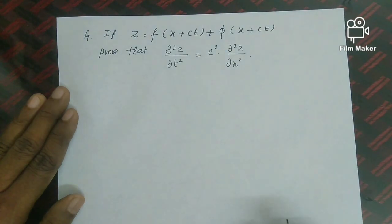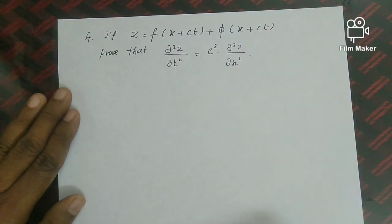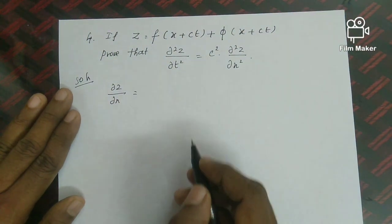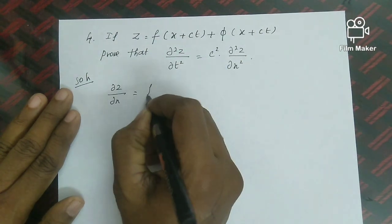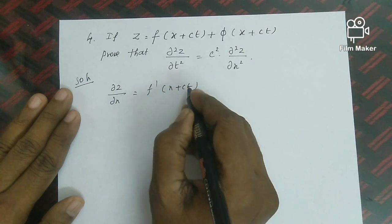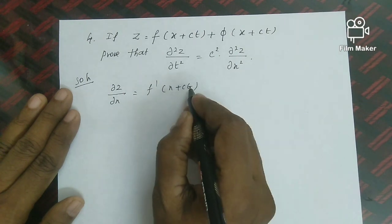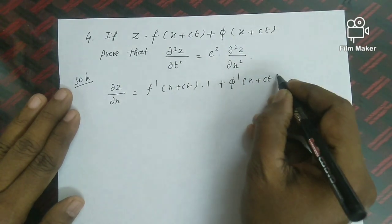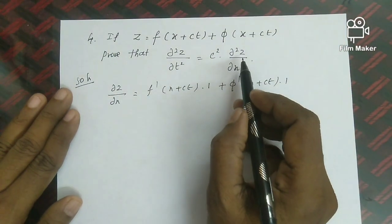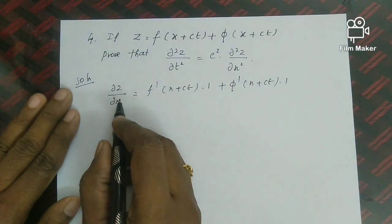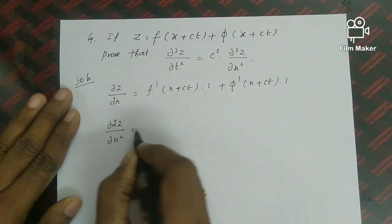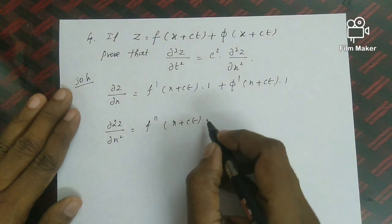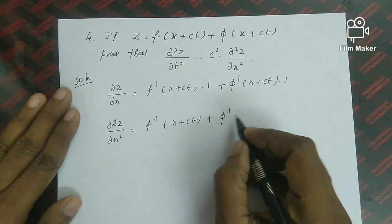In the proof, we differentiate z with respect to x and then t. We need four derivatives: ∂z/∂x, ∂²z/∂x², ∂z/∂t, ∂²z/∂t². For ∂z/∂x (treating t as constant): ∂z/∂x = f'(x+ct)·1 + φ'(x−ct)·1. Then ∂²z/∂x² = f''(x+ct) + φ''(x−ct). This is equation 1.